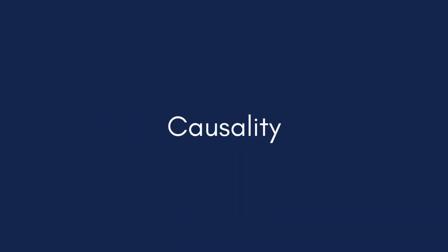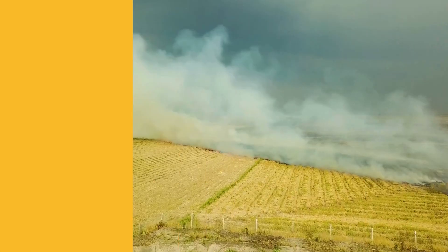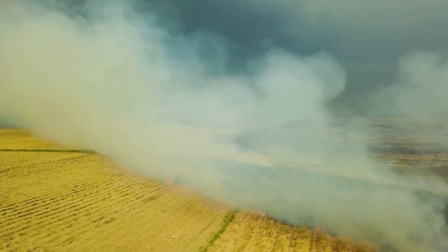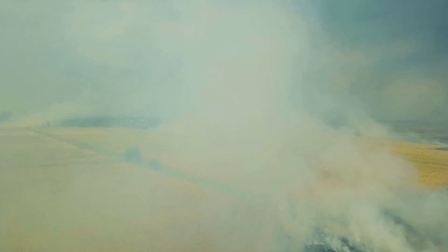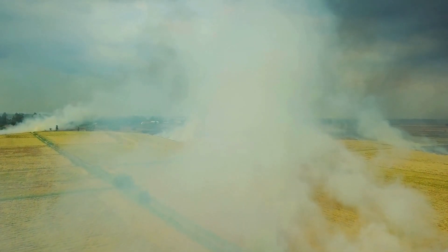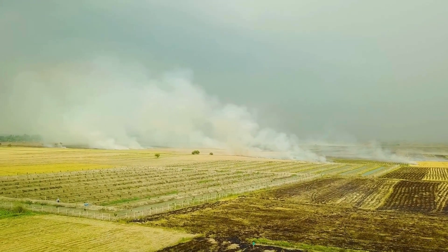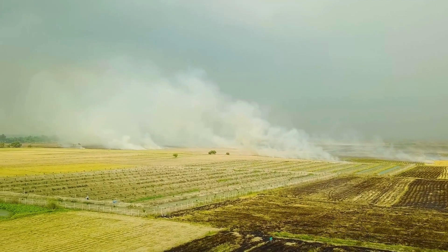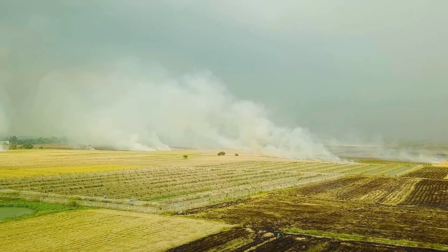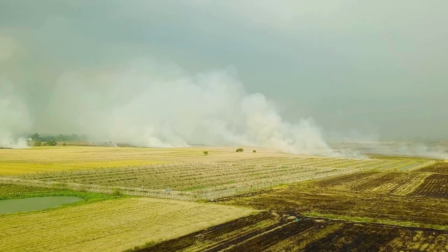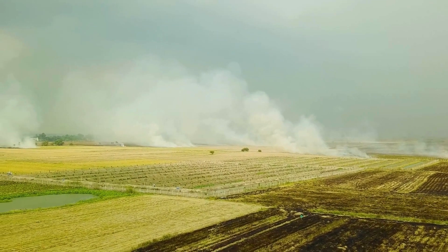Let's turn our attention to causality and delayed effect — two critical aspects of systems thinking. Causality is about understanding the relationship between cause and effect within a system. But unlike a simple one-to-one relationship, in complex systems the effects of an action can be delayed, leading to a chain of events that unfold over time. Consider the example of deforestation. When we clear forests, the immediate effect might be more land for agriculture or development. But the story doesn't end there.